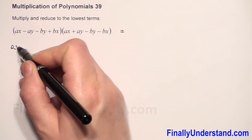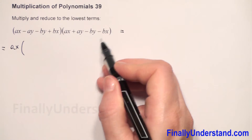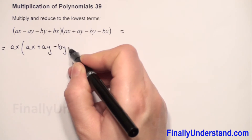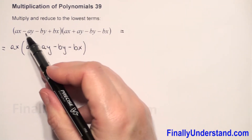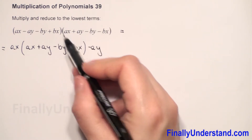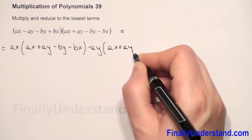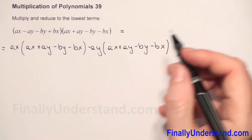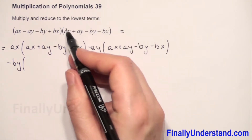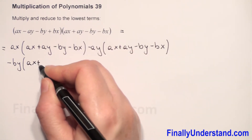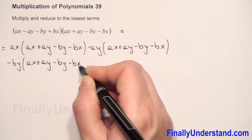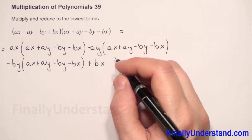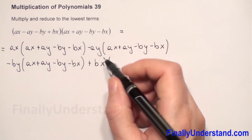We have first AX times this whole expression in the second parenthesis. Next, we have negative AY — we have to multiply times AX plus AY minus BY minus BX. And next, we have negative BY times the whole expression in the second parenthesis.